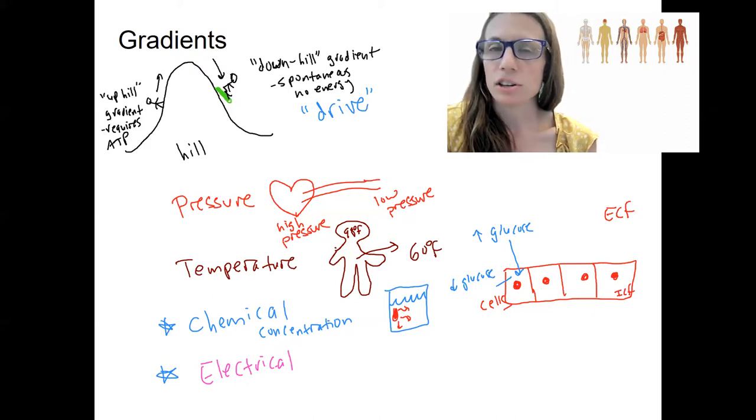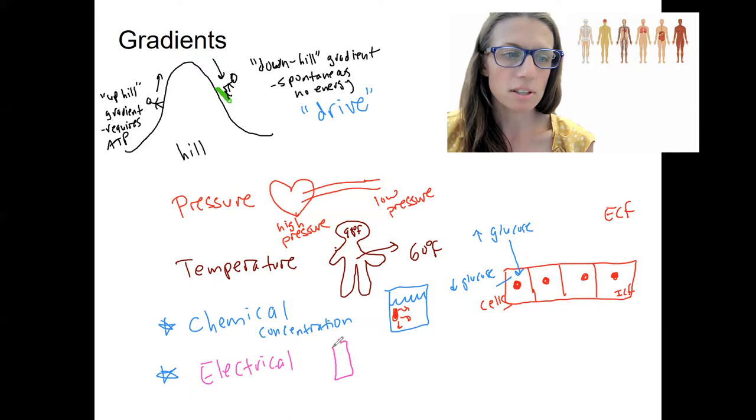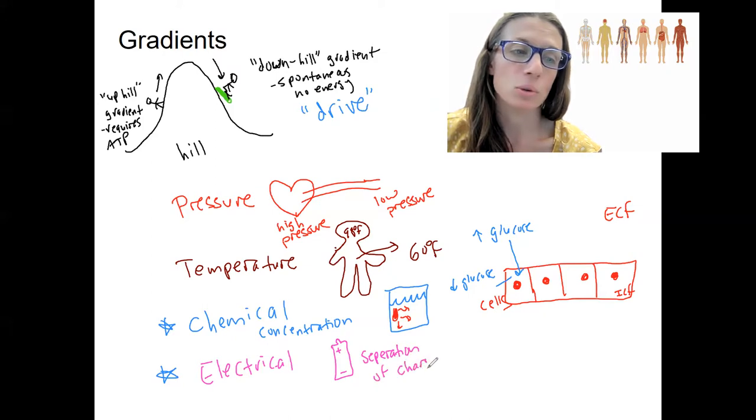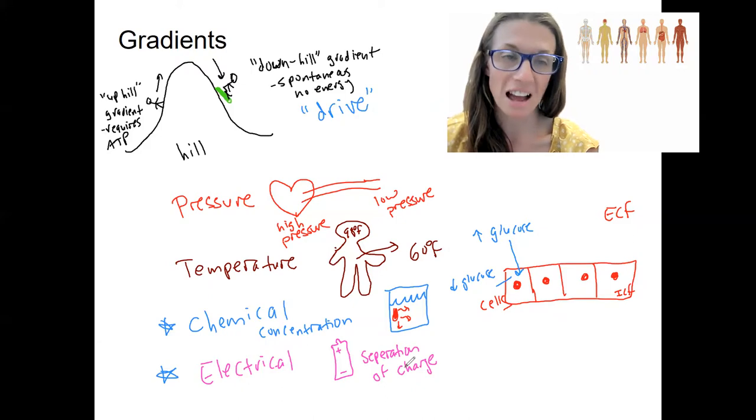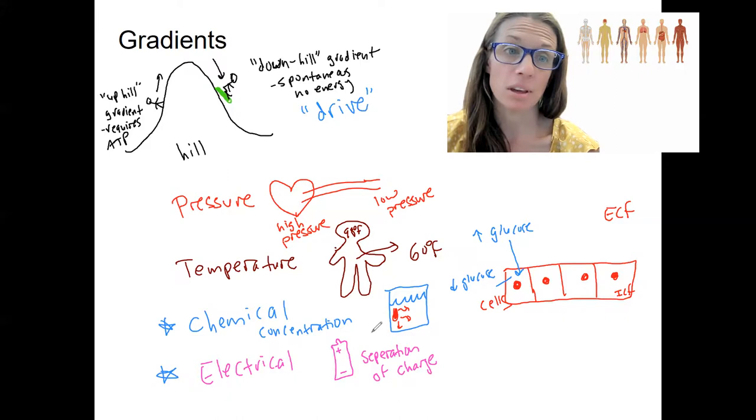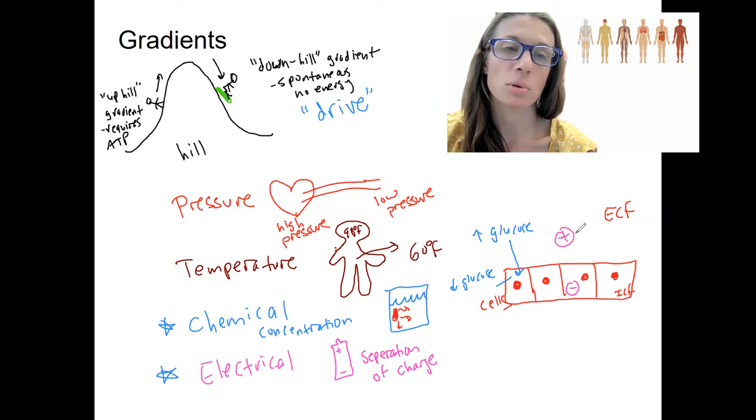Lastly, we've got electrical. The example you've seen of this in your everyday life the most is, what do you think this lovely thing is here? A battery, a battery. So, separation of charge, a charge difference, and batteries are designed to store charges, charged ions across that area there. Our cells do the same thing. So inside the cell, it's more negative compared to outside the cell, which is more positive.